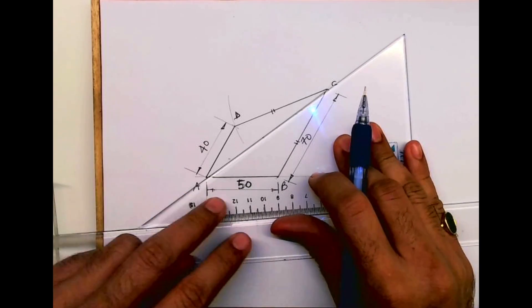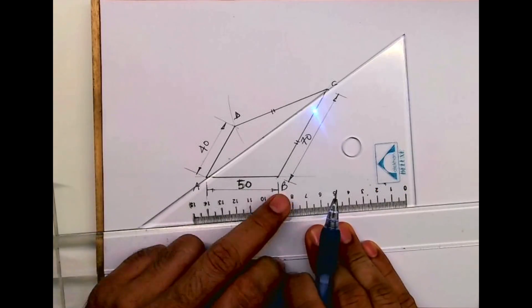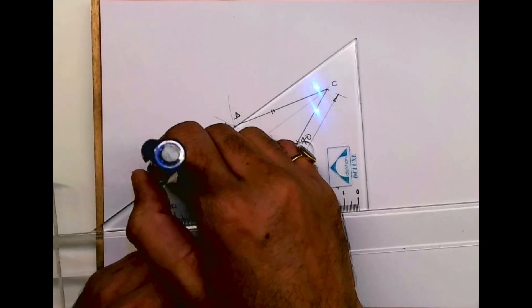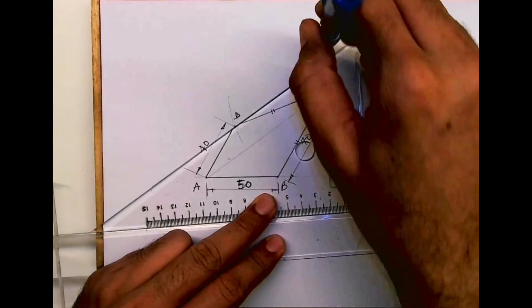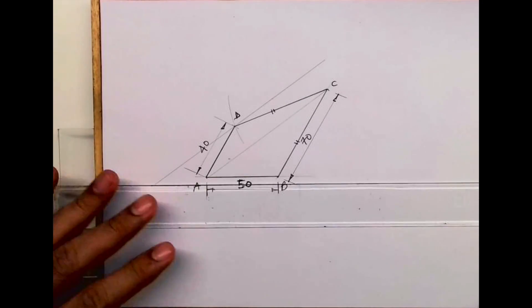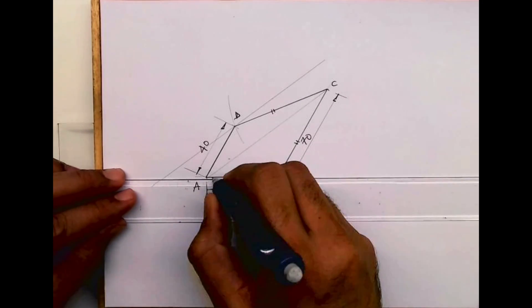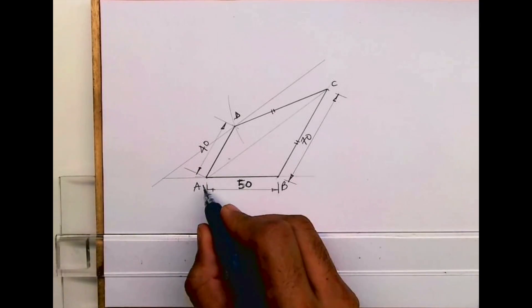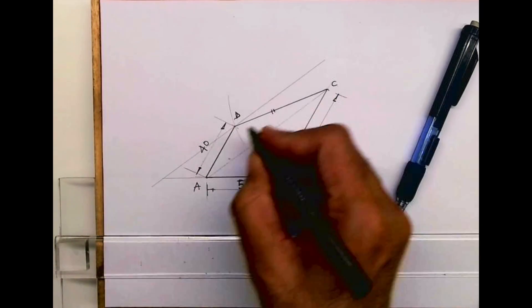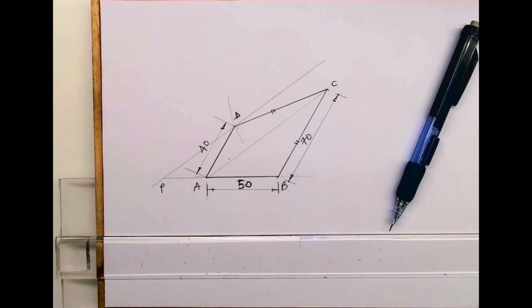Draw a line like this passing through point D, then you draw a horizontal line. Now instead of triangle ACD...